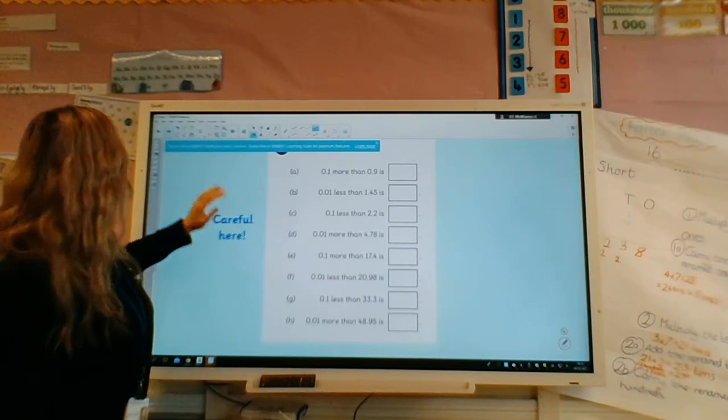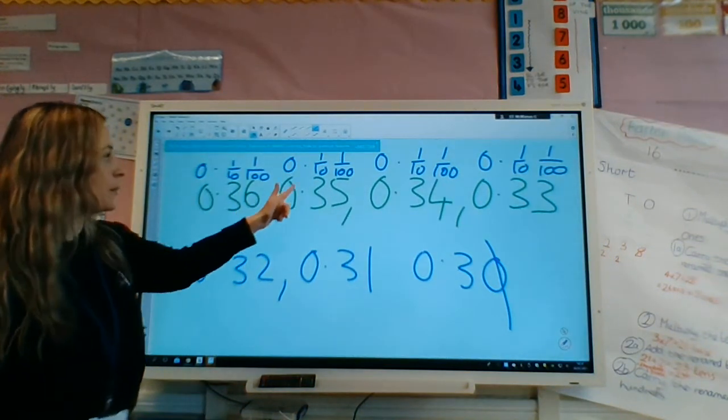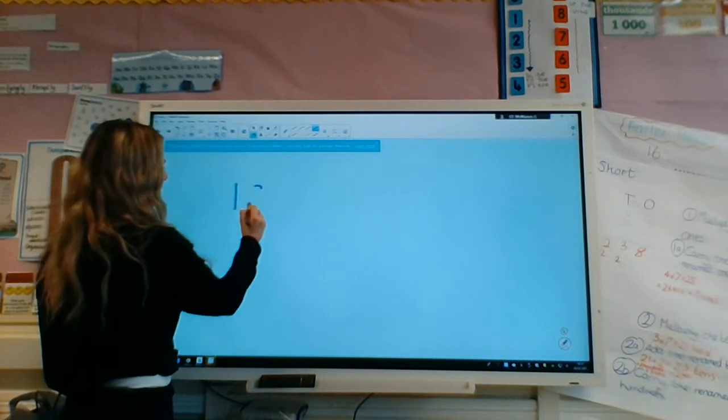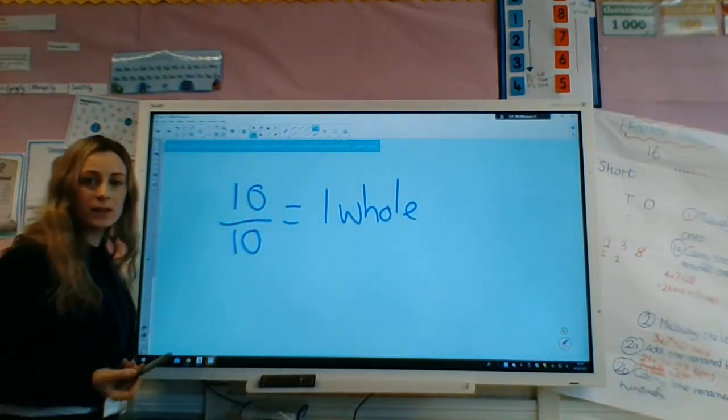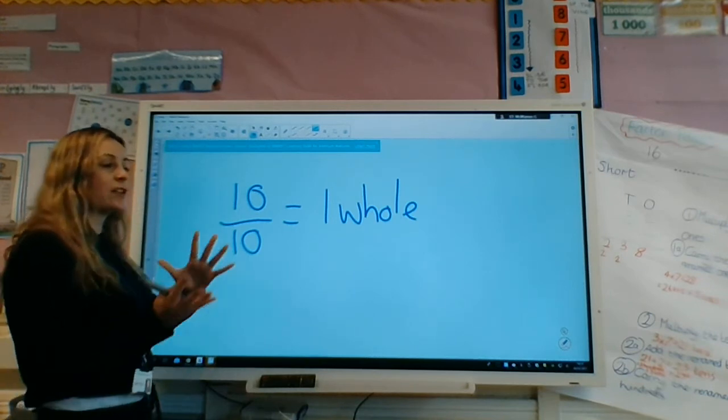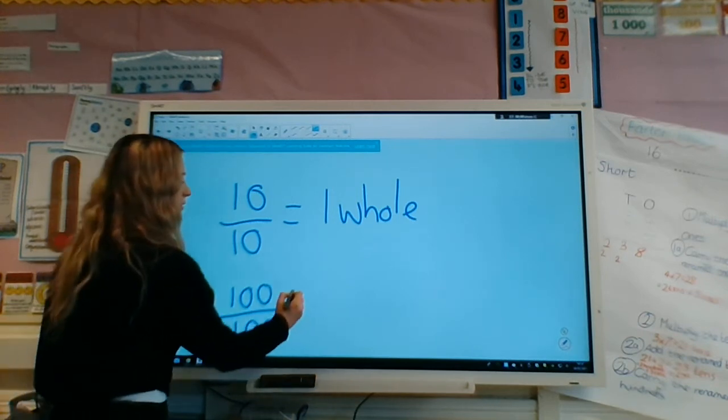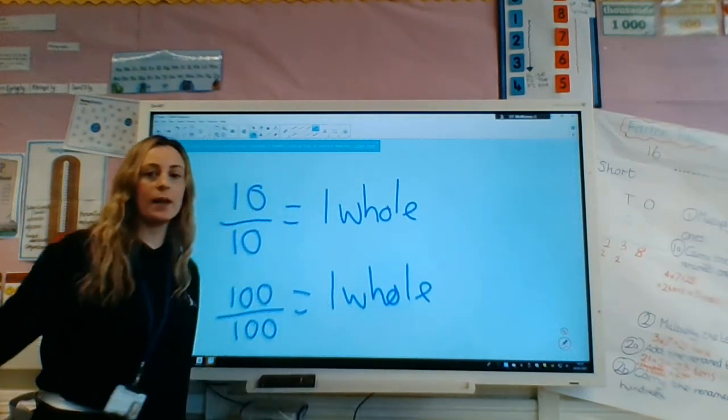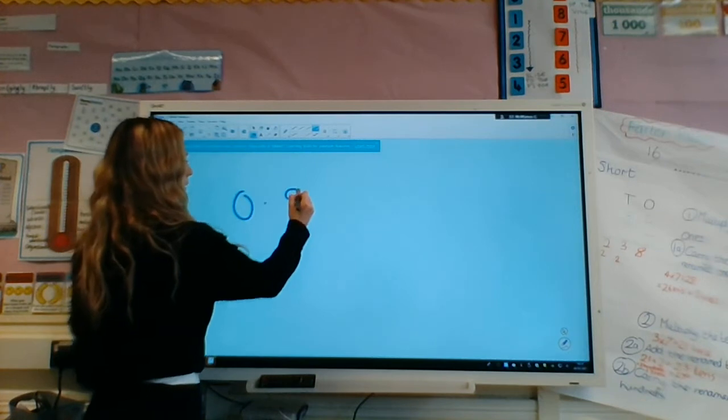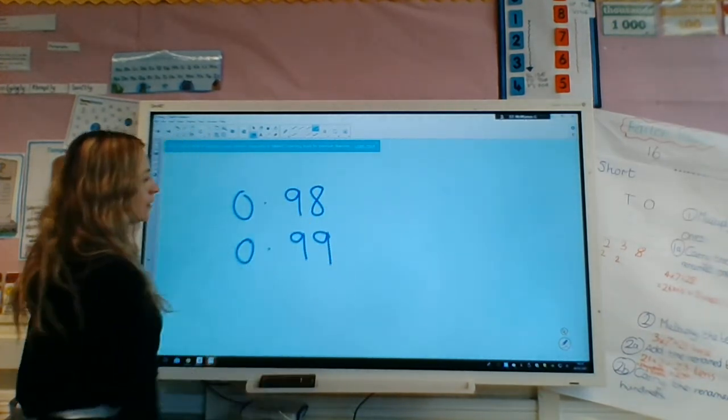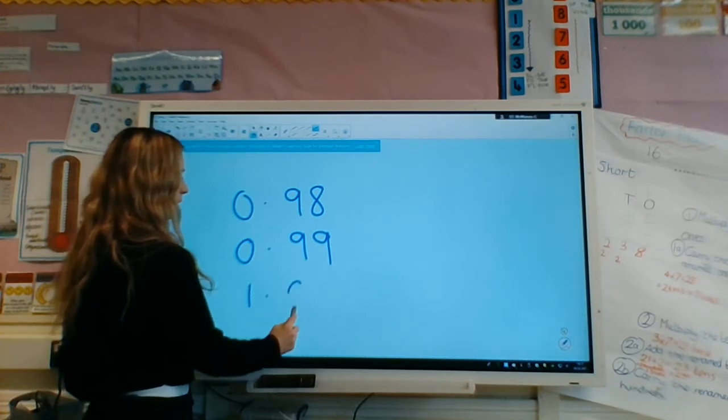And then you've got other questions here. So it's important to make sure that you put your place value above the numbers, so you recognize which number's changing. And just remember these key rules, that 10 tenths equals one whole. So if you've got 0.9, the next number's not going to be 0.10. It's going to be the next whole number, because it'll be 10 tenths. And then remember that a hundred hundredths also equals one whole. So if you look in the hundredths column, if you've got a hundred hundredths, it becomes the next whole.